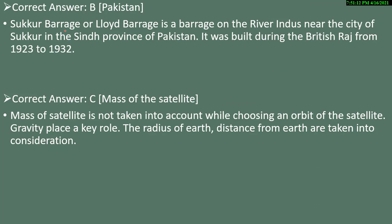The Sukkur Barrage — also called Lloyd Barrage — is a barrage on the River Indus, located near Sukkur city in Sindh province, Pakistan. It was built during the British Raj from 1923 to 1932, taking ten years to complete. For question 8, mass of the satellite is not taken into account while choosing an orbit; gravity, radius of earth, and distance from earth are considered.